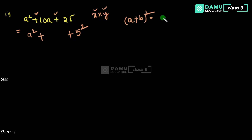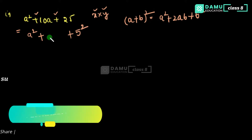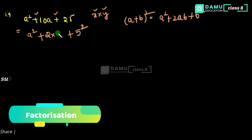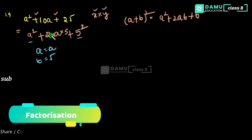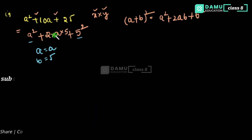The formula is: a squared plus 2ab plus b squared. In our expression, a squared is there, and b is 5. So 2 into a into b — b is 5, a is a — gives 2 into a into 5, that is 10a. So we have a squared plus 2ab plus b squared confirmed.